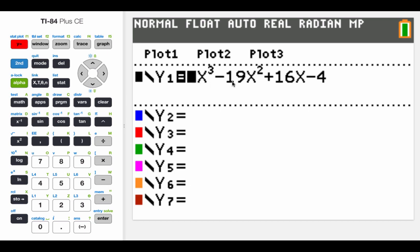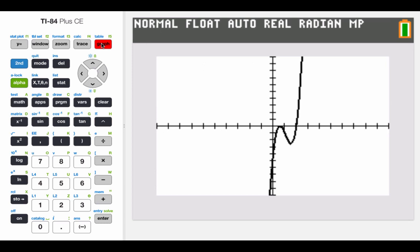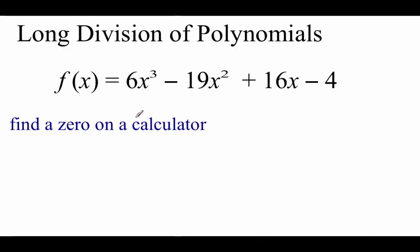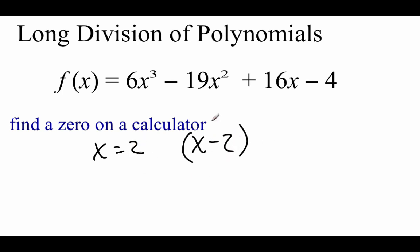I've already got this function typed into my y-equals screen. You might want to pause the video and type that in. If we graph it out, remember a zero is also known as an x-intercept. So if we take a look at our graph, there are a couple places where our graph touches the x-axis. It looks like it crosses at a nice integer value — it looks like that's an x value of 2. Since x equals 2 is a zero of this function, we can work backwards to figure out that x minus 2 would have to be a factor, because if we set it equal to 0 it gives us x equals 2. So I want to use this x minus 2 factor to help us break this polynomial down into something a little bit easier to work with.